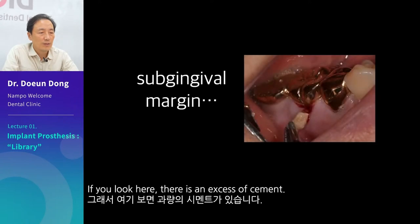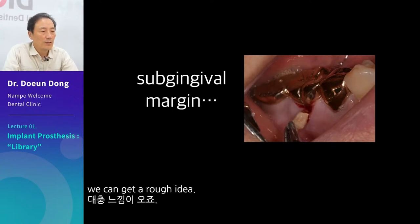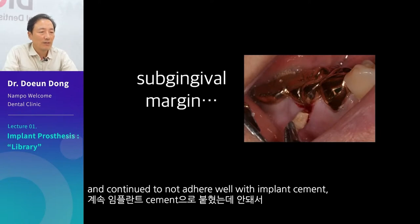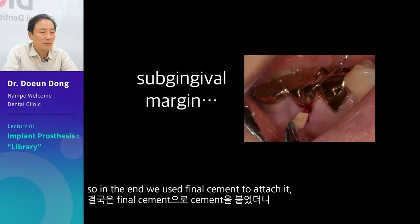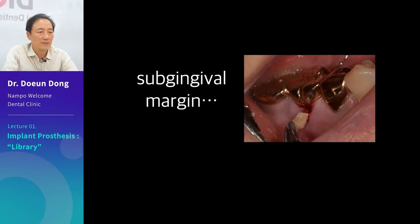If you look here, there is an excess of cement. When you look at the process this patient has gone through, we can get a rough idea. At first it did not attach well and continued to not adhere well with implant cement. In the end, final cement was used, it went under the gum, and it did not come out. We can see this history. When we removed it, the gums healed well.